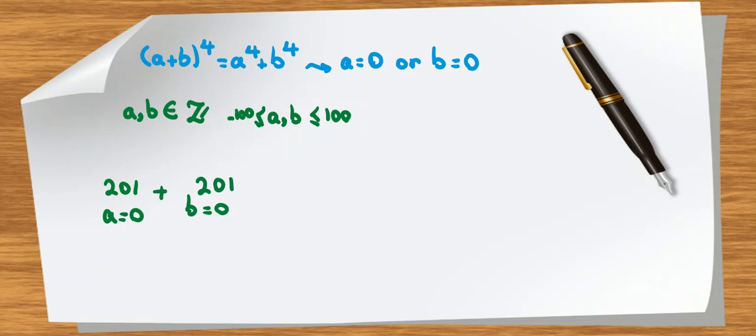But the answer is not 200 plus 200. It's not 402, sum of them. Because we calculated a equal to 0, b equal to 0 twice. So, we should subtract by 1. And it will be 402 minus 1, which equals 401.